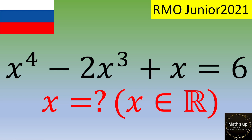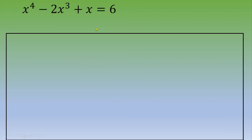There are many ways to solve this. One way is to end up with a quantity equal to zero. So let's move the 6 to the other side of the equation, giving us x⁴ - 2x³ + x - 6 = 0.